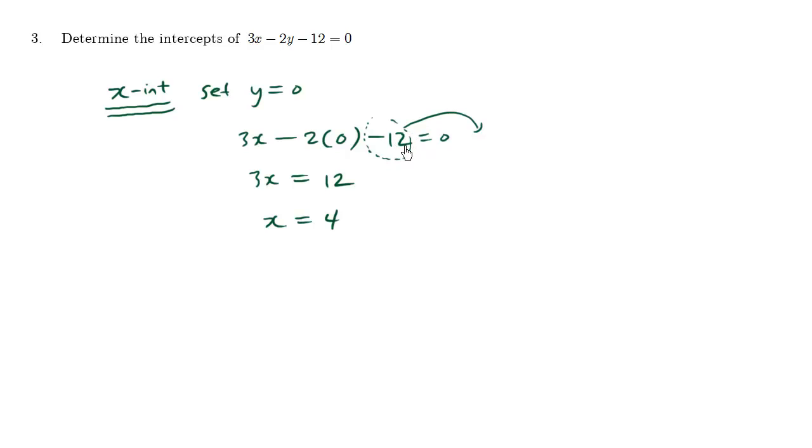Now to find the y-intercept, we're going to set the opposite variable, x equals zero, for this same formula. So we're going to say three times x, which is zero, minus two y minus twelve equals zero.